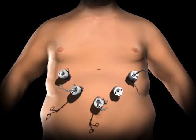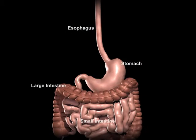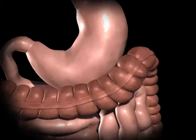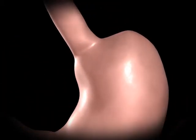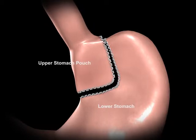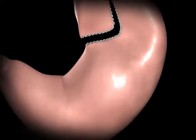The surgeon examines the abdominal cavity using a laparoscope or video camera. A small stomach pouch is created using a stapling device. This smaller stomach pouch restricts the amount of food that can be eaten before feeling full.